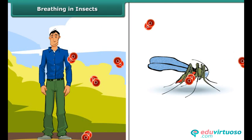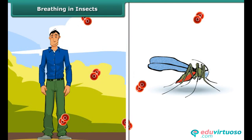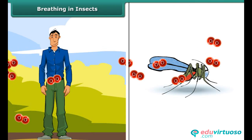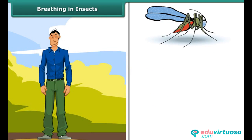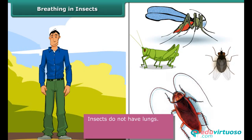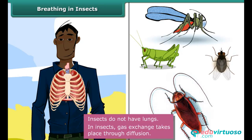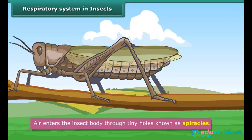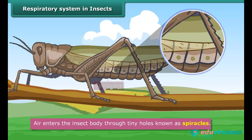Like human beings, insects need oxygen for survival and produce carbon dioxide as a waste product. But unlike human beings, insects like grasshoppers, houseflies, and cockroaches do not have lungs. The process by which gas exchange takes place in insects is known as diffusion. Air enters the insect body through tiny holes on the sides of the body, known as spiracles.